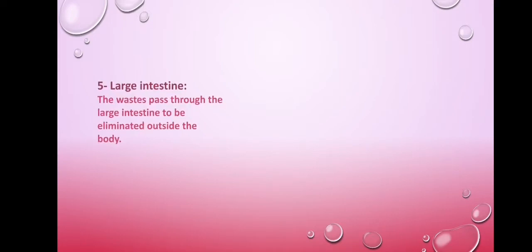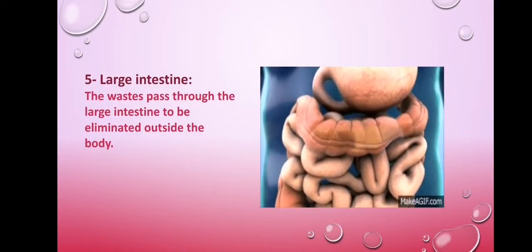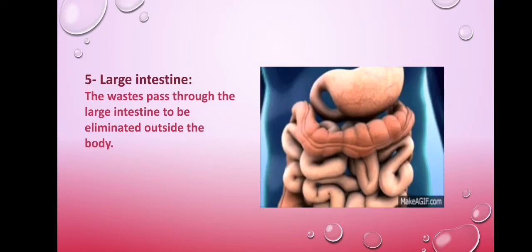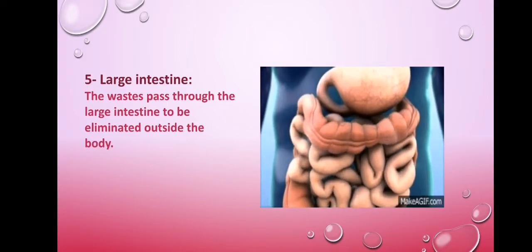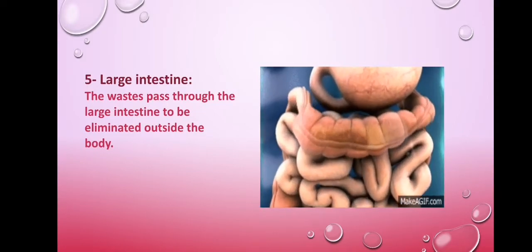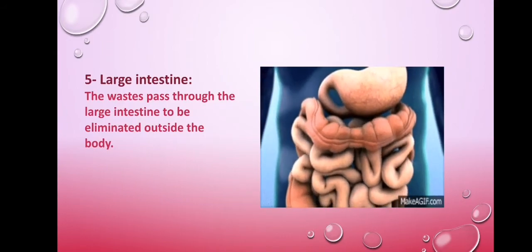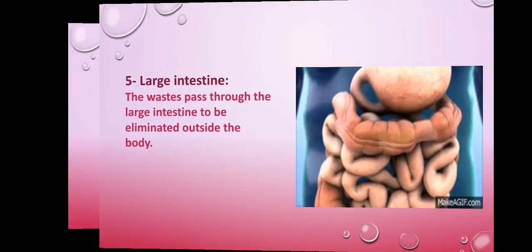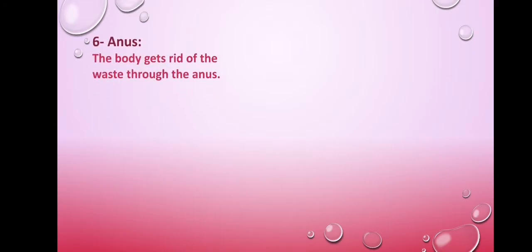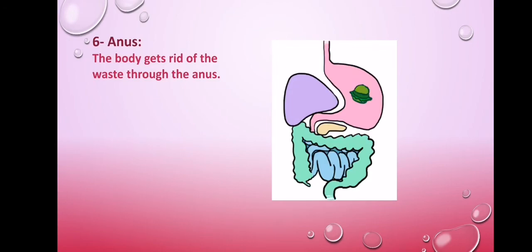The large intestine. In the large intestine, the waste passes through to be eliminated outside the body. Here you can see the anus. The body gets rid of waste through the anus. The anus is the final part of the digestive system.